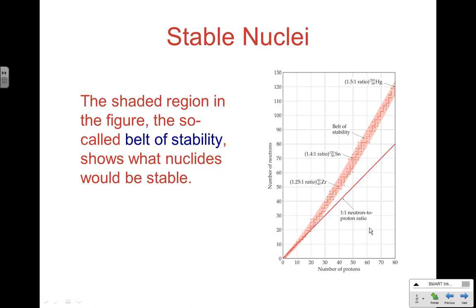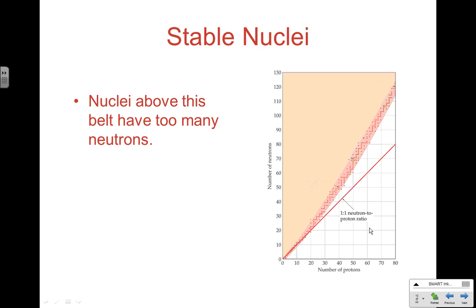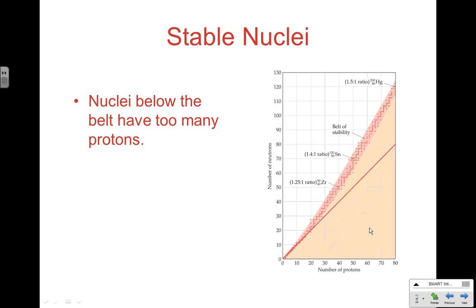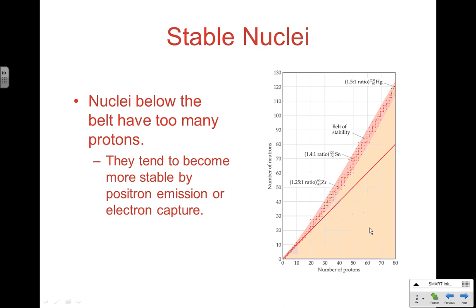The shaded region in this picture is often referred to as the belt of stability, which shows which nuclides will be stable. At the same atomic number, you can have several stable nuclides as long as they're within that band. Outside of that band, you will be unstable. Nuclei above the belt have too many neutrons and tend to decay by beta particle emission. Below the belt, we have too many protons, and positron emission and electron capture are both ways to get our neutron-to-proton ratio back to the belt of stability — getting rid of some protons or converting protons into neutrons.